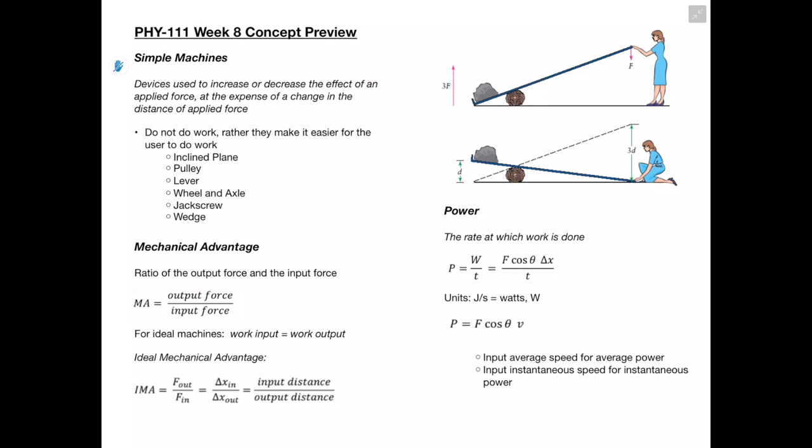In this video, we're going to be going over the week 8 concepts for Physics 111. Starting off with simple machines, these are devices used to increase or decrease the effect of an applied force at the expense of a change in the distance of applied force. So they're not going to do work for us, but they're going to make our work easier. These would include incline planes, pulleys, levers, wheel and axles, jack screws, and wedges.